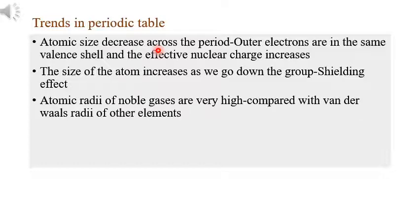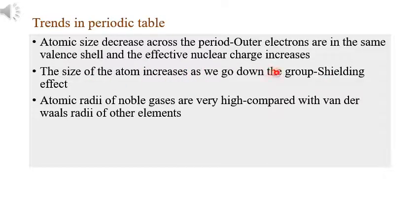If we consider going down a group, there are more shells present. Because of that, the shielding effect outweighs the nuclear attraction, so the size of the atom increases as we go down the group. Noble gases are monoatomic and highly stable, so their atomic radius is very high compared to other elements.